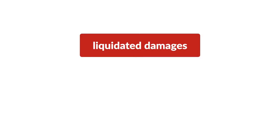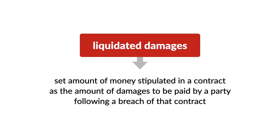Liquidated damages are a set amount of money stipulated in a contract as the amount of damages to be paid by a party following a breach of that contract. Such clauses are generally enforceable when they are neither unconscionable nor contrary to public policy.